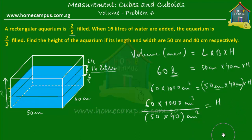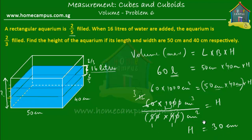The calculation is straightforward: the two zeros cancel, giving 12 over 1, and then simplifying further gives 3 times 10 equals 30. Therefore the height equals 30 centimeters. The cm² in the denominator cancels with one of the cm units, leaving centimeters — so the height is 30 centimeters.